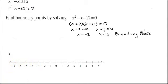So here's my number line. And so I have boundary points at x equals negative 3. So here's one. There's negative 3. And my other one is at x equals 4.